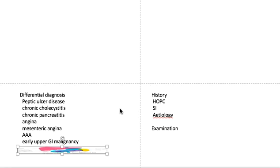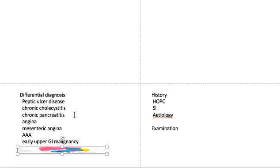Looking at other features, we can check for GI blood loss. This patient denied any hematemesis or melena, making peptic ulcer disease less likely. Another useful feature is radiation of the pain — aortic aneurysm can radiate to the back, but radiation is more typical of the biliary system and especially chronic pancreatitis. This patient felt the pain radiating towards the back when it was more severe.